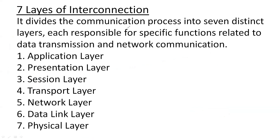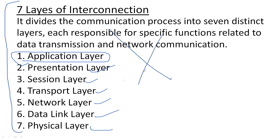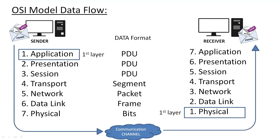These seven layers are responsible for the transmission of data. The first layer is the Application layer, second is the Presentation layer, third is the Session layer, then the Transport layer, Network layer, Data Link layer, and Physical layer. All seven layers have their specific tasks. It is important to note that the OSI model is only a reference model or conceptual model used to understand networking technology — there is no physical implementation.